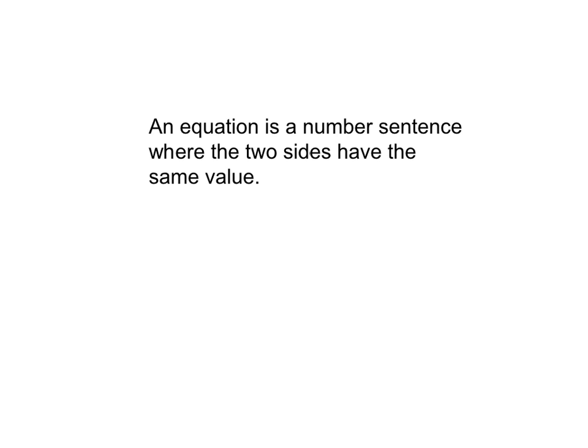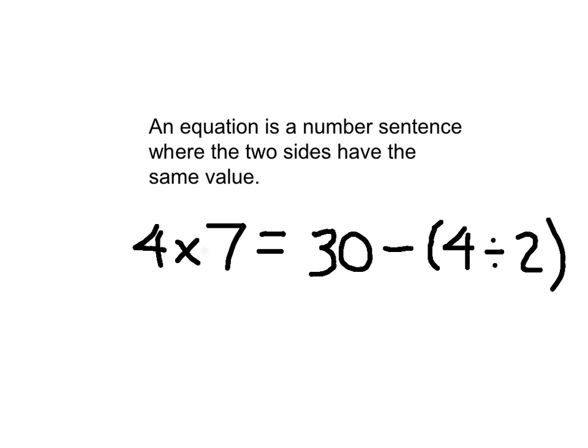Go ahead and take a moment to write down this vocabulary. An equation is a number sentence where the two sides have the same value. Hit pause and go ahead and find a couple of examples for yourself of equations. There's an example for you: 4 times 7 equals 30 minus 4 divided by 2. There's no need to evaluate my expression, just as long as I know that the two sides have that same value. In this case, both sides have that value of 28.